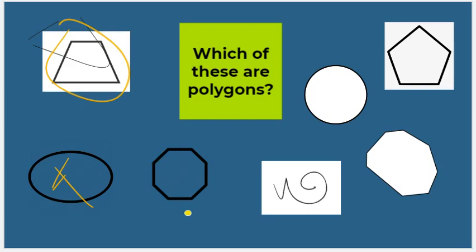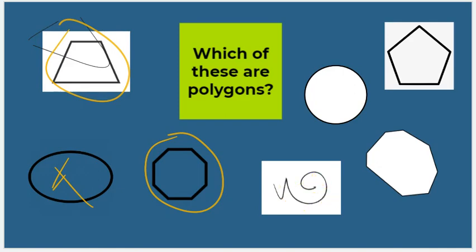How about this one? Is this a polygon? Yes, it is a closed shape with straight sides. How about this one? No — not the rectangle part, that is a polygon, but this little scribble inside is not a polygon because it's not closed and it does not have straight sides. I'm going to X that one out.